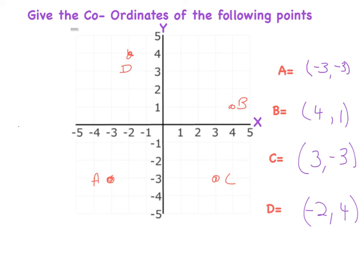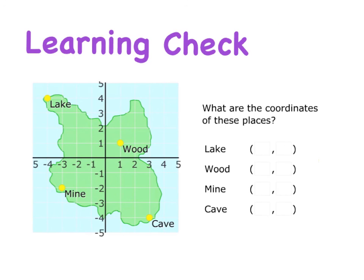So generally we will always be dealing with a four quadrant graph. So tonight's learning check is what are the coordinates of the following places. And remember you're going to have to label your Y axis and X axis. I'd like you to draw this grid out and mark in the wood, the mine, the cave and the lake. And then beside it write the coordinates. And I'll see everybody tomorrow.